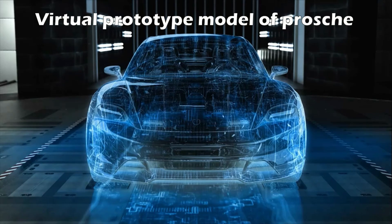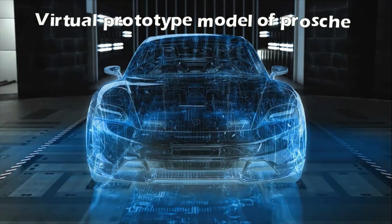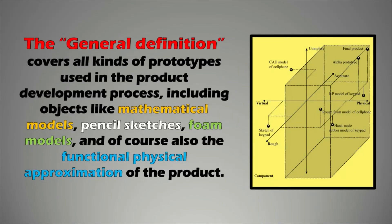The general definition covers all kinds of prototypes used in the product development process, including objects like mathematical models, pencil sketches, foam models, and of course the functional physical approximation of the product. We use the word approximation because it's a prototype intended to develop a functional product. Prototyping is the process of realizing these prototypes.